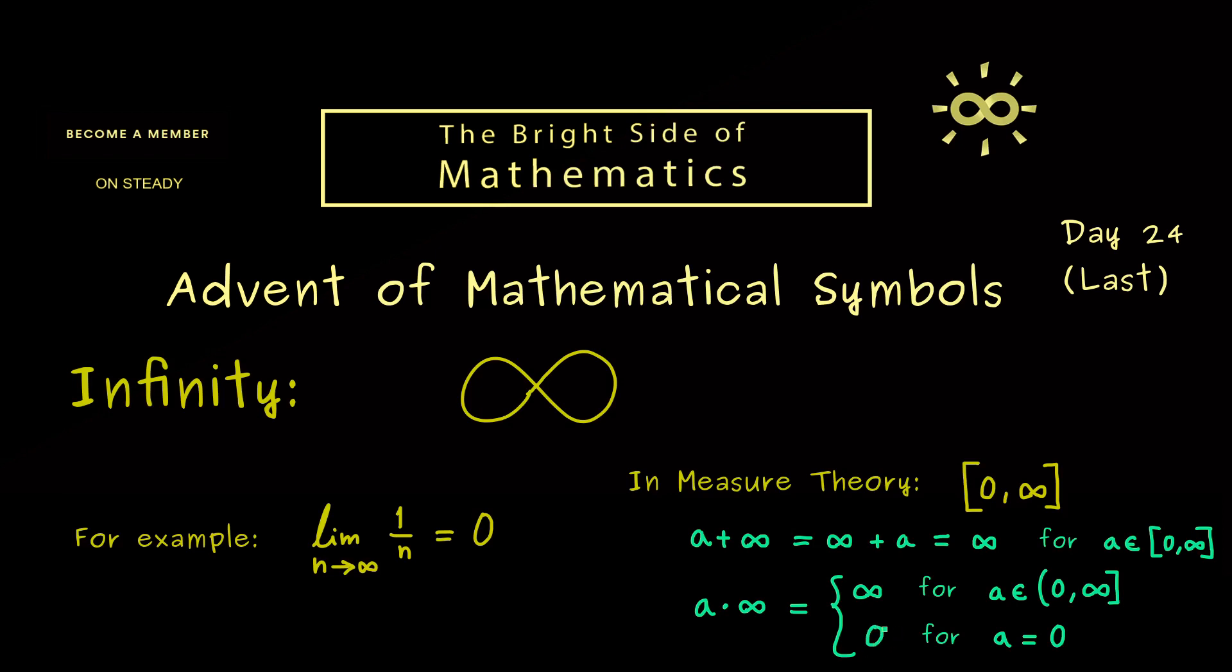This definition makes some formulas in measure theory simpler. Therefore it's very helpful there. Now having these definitions you can check that we still have commutative laws, associative laws and distributive laws. Or in other words some calculation rules still hold when we deal with infinity in this way.